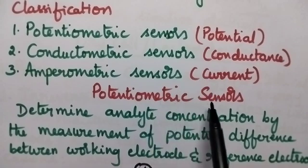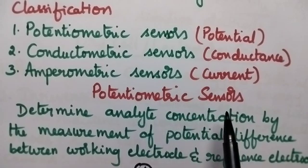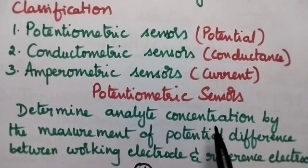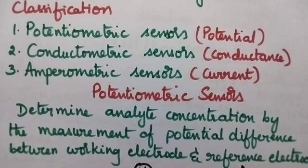Moving to the potentiometric sensors, the analyte — that means the test solution concentration — can be determined simply by measuring the potential difference between the working electrode and the reference electrode. For better understanding, let us see the construction of a potentiometric sensor.